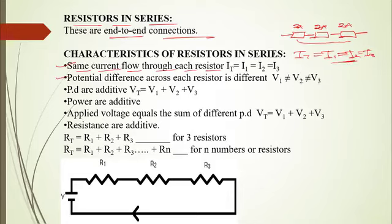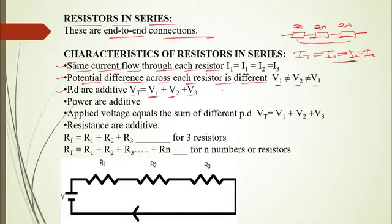The second characteristic of resistors connected in series is that the potential difference across each resistor is different. The voltage across the first resistor is not equal to the voltage across the second, and the voltage across the second is not equal to that across the third. To find the total potential difference you add them: V1 plus V2 plus V3. For example, if V1 is 2 volts, V2 is 3 volts, and V3 is 4 volts, the total is 2 + 3 + 4 = 9 volts.